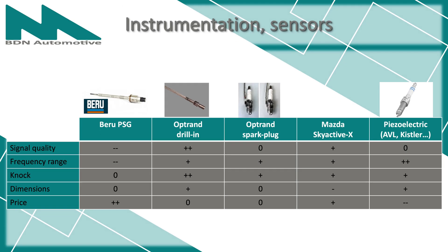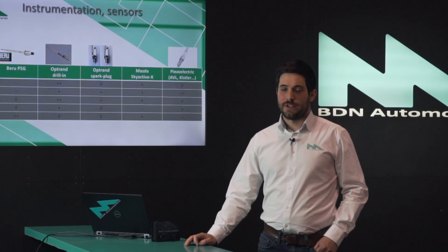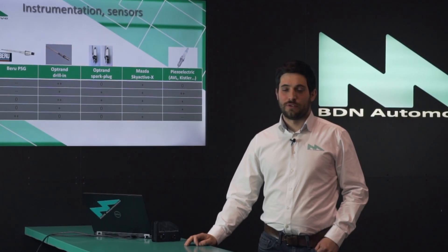A comparison table on this slide shows different properties of different kinds of sensors, like signal quality, frequency range, noise detection, dimensions, and price. From the table it is clearly visible that there is no perfect sensor — there is just an optimum choice for the given application.